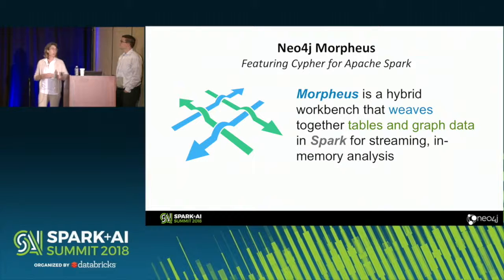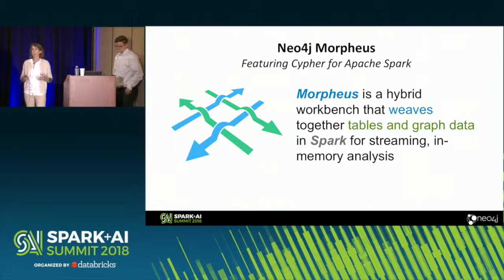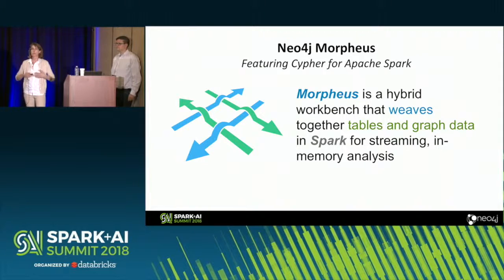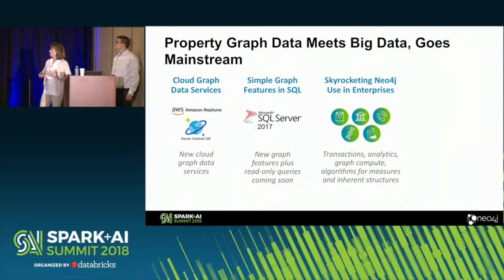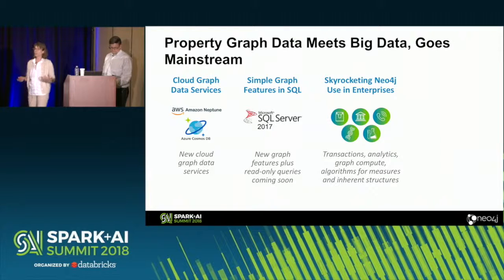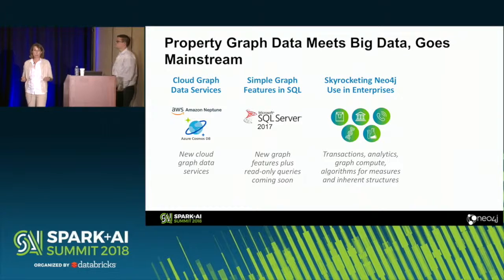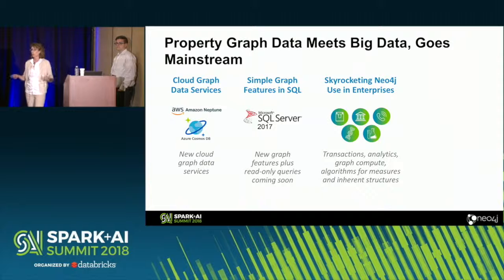What we're here to talk about today is a new product called Neo4j Morpheus. Many of you will probably recognize the movie source for that name. Morpheus is a hybrid workbench that weaves together both table and graph data in Spark so you can do your in-memory analysis and wrangling of that data. Neo4j is a very popular graph database, but we're not the only one out there. There's graph functionality on top of SQL, announcements from AWS Neptune, Cosmos DB on Microsoft. Property graph databases are really rising in use, especially the last couple of years.